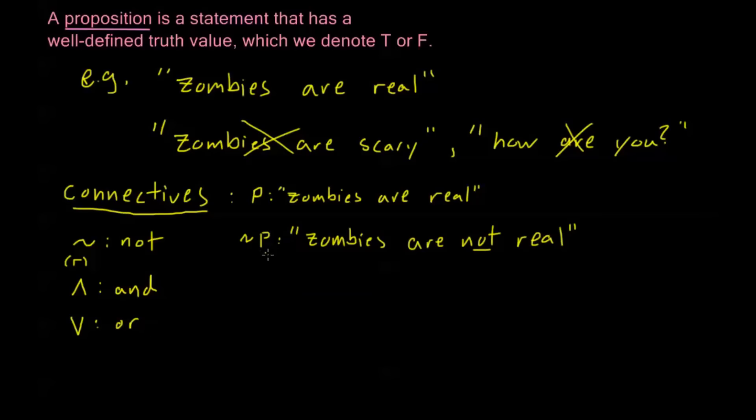Now, just to give you some terminology, not P, we sometimes call this the negation of P. If I have something like P and Q, that's sometimes called the conjunction. And if I have this P or Q, where P and Q are both simple propositions, this is called a disjunction. And again, not P, this would be called a negation.